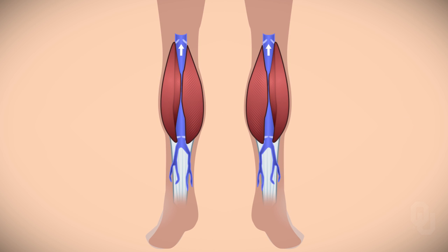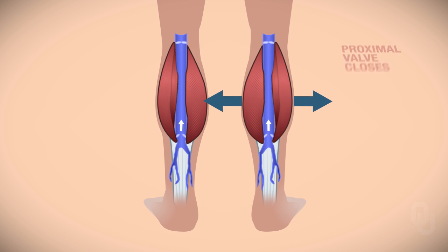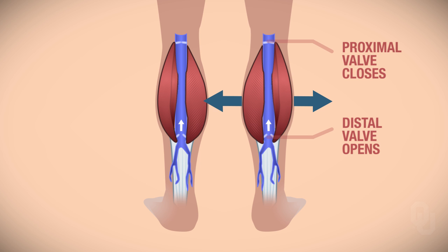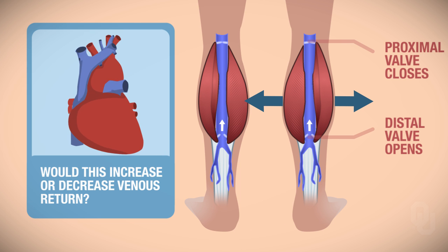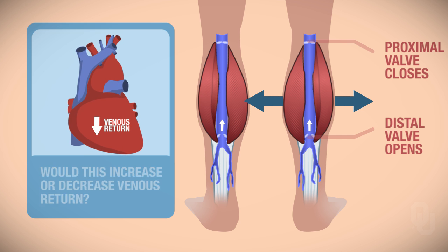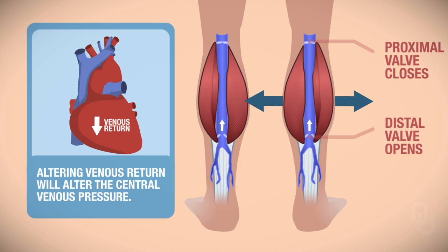Now let's go the other way. The woman is no longer standing on her tippy toes, so the calf muscle relaxes. As a result, the proximal valve closes — because gravity pushes blood back down the leg, which pushes the valve shut. The proximal valve closes and the distal valve will open. This would decrease venous return. Altering venous return will alter the central venous pressure.